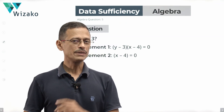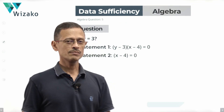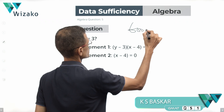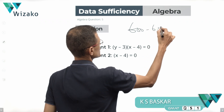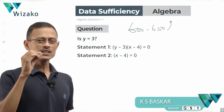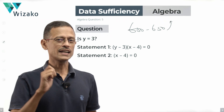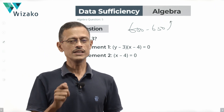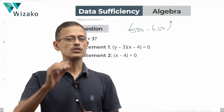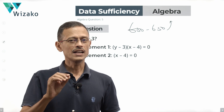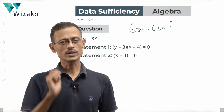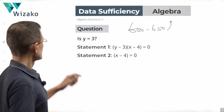This is a beautiful question, medium difficulty. I will classify it as a GMAT 600 to 650 level data sufficiency question in algebra. There are some things that we take for granted when we solve equations, and this question is going to give us a good understanding of that — telling us we should not take some things for granted. Let's get started.